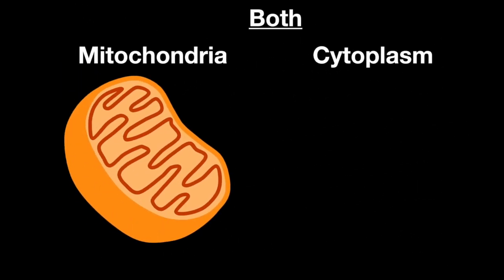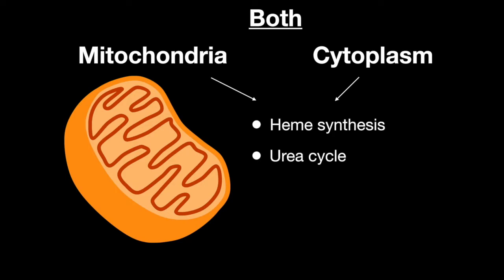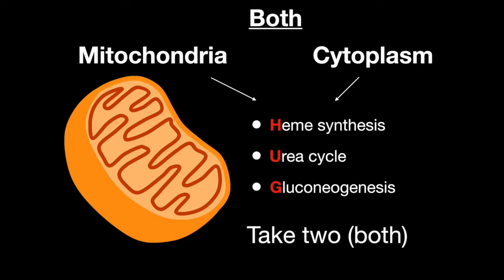In both the mitochondria and the cytoplasm, heme synthesis, the urea cycle, and gluconeogenesis take place. Remember that hugs take two.